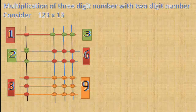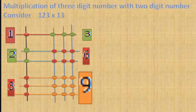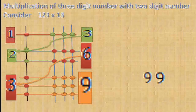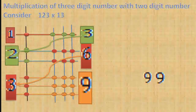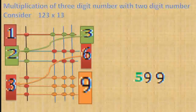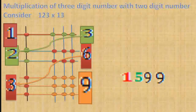Starting from the right bottom corner, the number 9 — write it in the answer. Then add the numbers 6 and 3, that is 9 — write it in the answer before 9. Then add the numbers 3 and 2, that is 5 — write it in the answer. And finally, the number 1. That is, 1599 is the multiplication of 123 and 13.